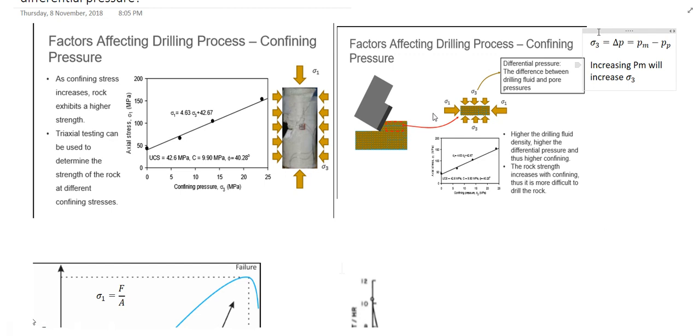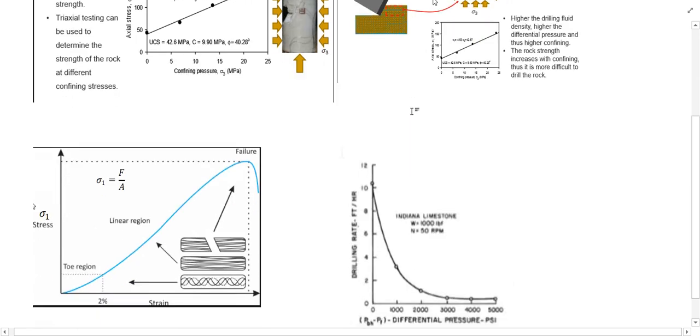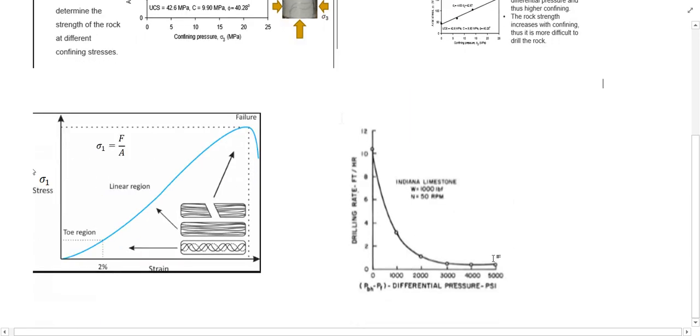With increasing Sigma 3, it will be more difficult to drill the rock. Therefore, increasing the differential pressure will decrease the rate of penetration or drilling rate.